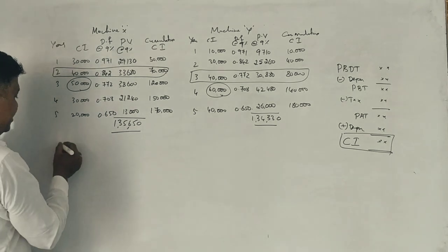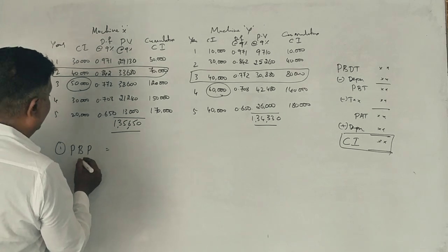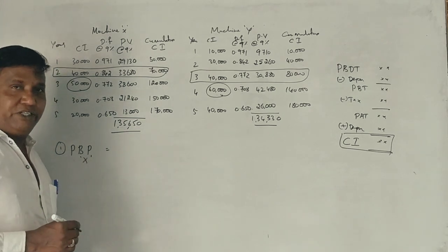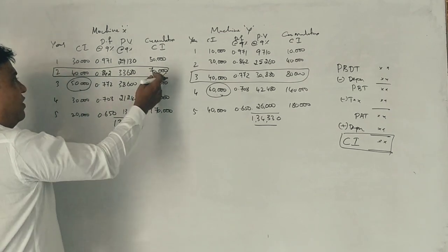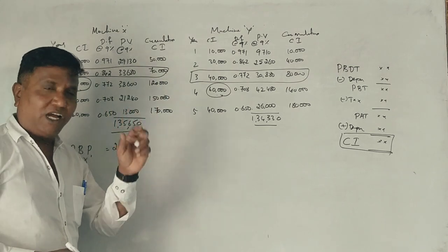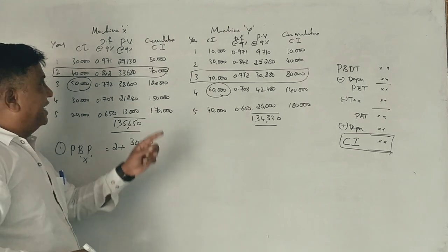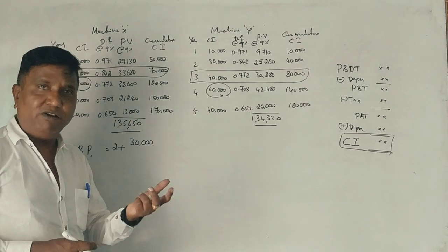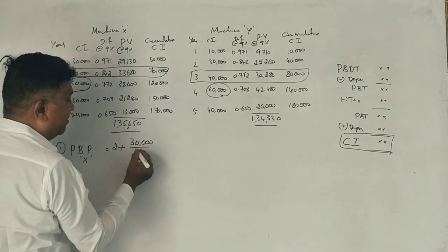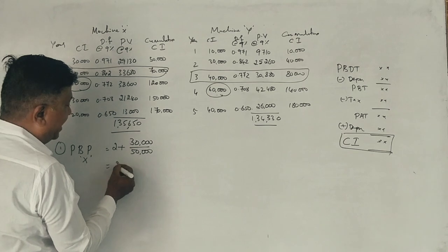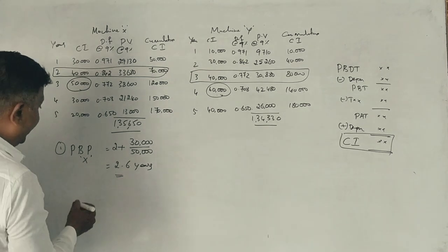Now let us see the answers. Payback period for Machine X. We are getting in the second year. For 1 lakh already we have covered 70. How much more is required? 30,000. Next year 50,000. So 30,000 divided by 50,000 is 0.6. That is 2.6 years.